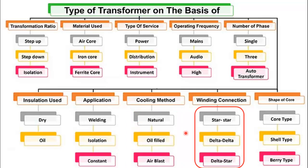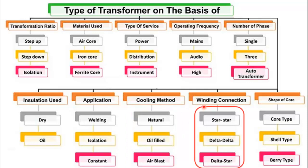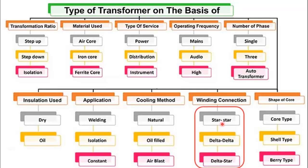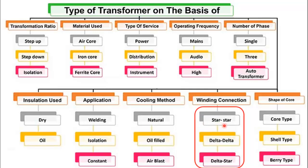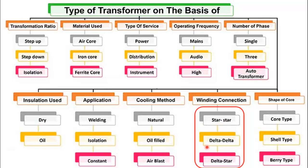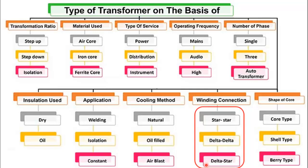Another category is the type of winding connections. If both the primary and secondary windings are connected in star, this is called star-star. Similarly, if both windings are connected in delta, we have delta-delta, and another is the delta-star type of transformer. All these types have different applications.